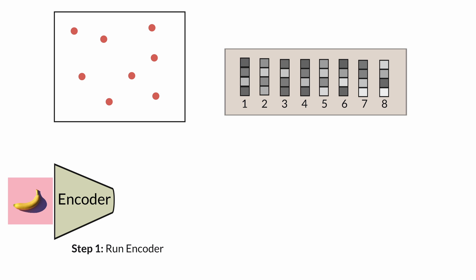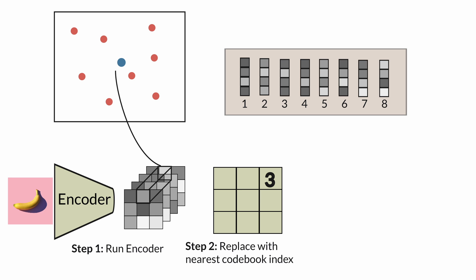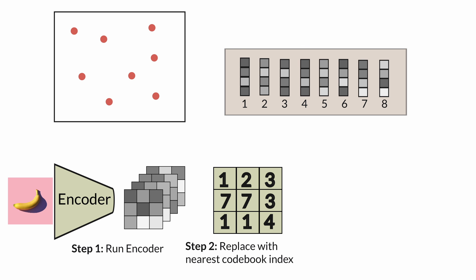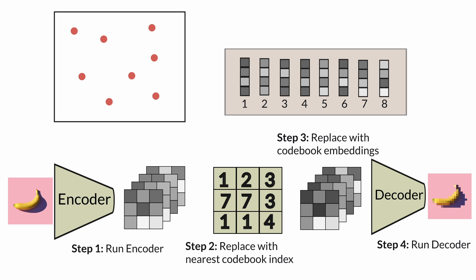When the encoder outputs its latent tensor, each vector is mapped in the embedding space and replaced by the integer index of the nearest codebook embedding. For example, if the top-right vector is closest to codeword 3, we replace it with the integer 3. We repeat this for all feature map vectors to produce a 32 by 32 integer map. This map is input to the decoder, which fetches the corresponding codebook vectors and generates the new image. That is the entire VQVAE forward pass.